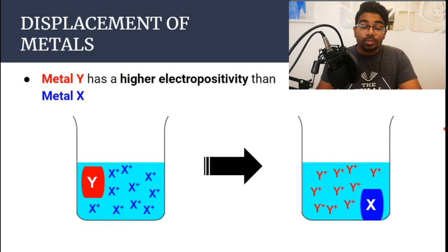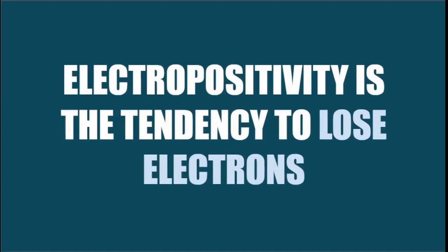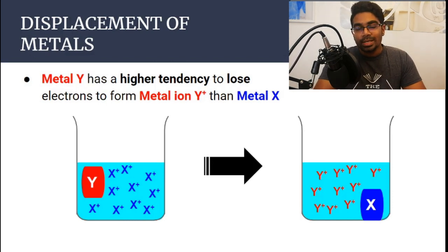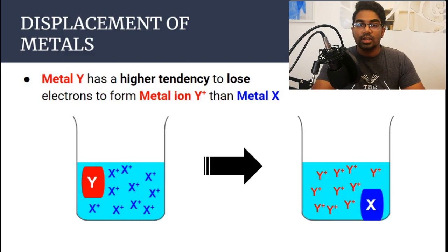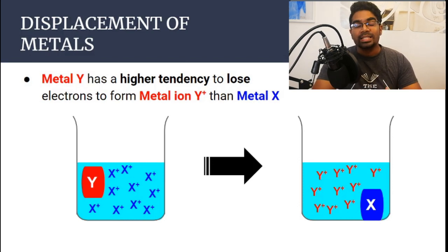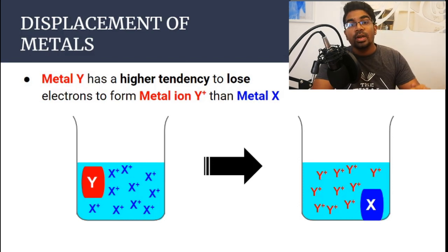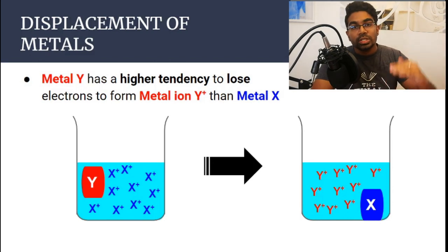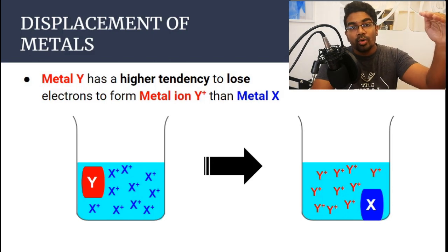Electropositivity simply means the ability to donate an electron. We need to look at the electrochemical series, because the electrochemical series is an arrangement of metals in order of their electropositivity. Those that are higher up are more electropositive.